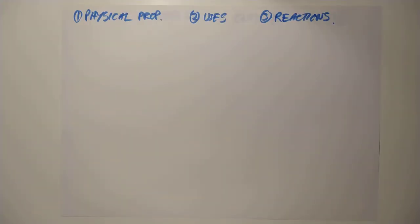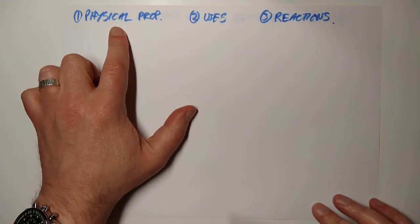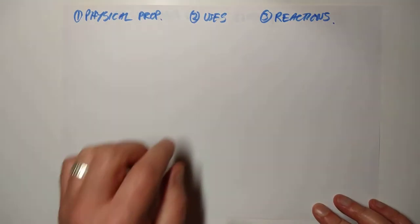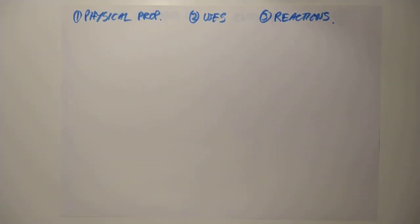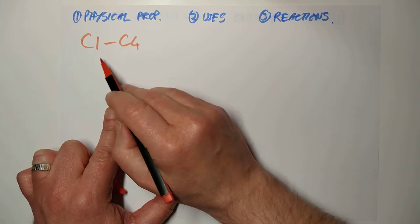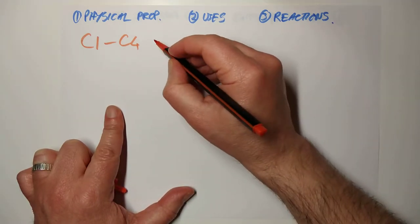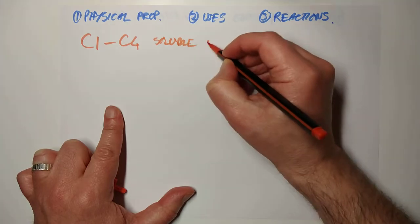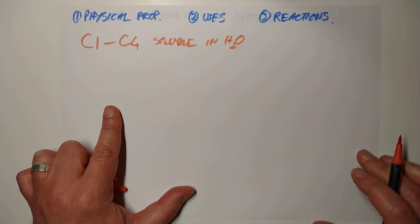Here's what I'd like to look at for this carboxylic acid homologous series: physical properties, uses, and reactions. Let's take a look at physical properties first - the SQA are keen for you to know these. Solubilities: they want you to know that the first four carboxylic acids dissolve in water. From C1 to C4, that's methanoic to butanoic, they are soluble in water. After that, they don't dissolve anymore, for reasons we'll come back to at Higher.